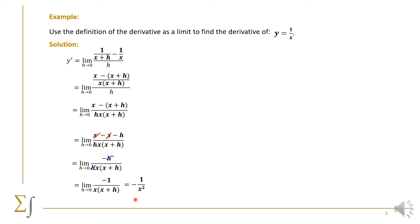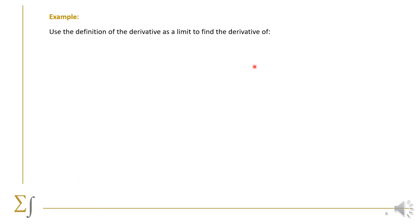Minus 1 over x² is the derivative of the given function 1/x. We move on to another example: use the definition of the derivative to find the derivative of y equals square root of x. We start by writing y′ equals the limit as h→0 of (√(x+h) minus √x) all over h.